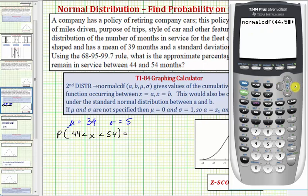And what you would have to do is enter 44, 54, 39, 5. Which again is the lower x value, upper x value, mean, and standard deviation. On this newer version, the previous screen just helps enter these four values.